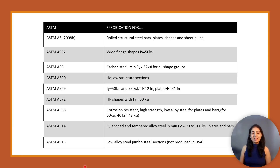As we grow professionally, we learn a lot of new concepts, and as human beings it is not easy to keep all those concepts in mind. My mentor Akash Patil from CV Patil and Associates advised me that I should know where to find a particular concept for better accuracy and reference. For example, in ASTM A6 2008B we will find rolled structural steel bars, plates, shapes, and sheet piling.